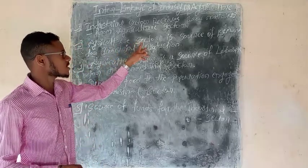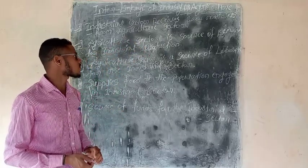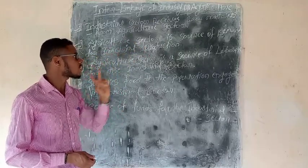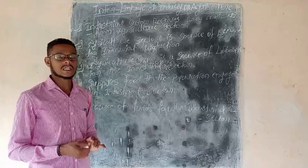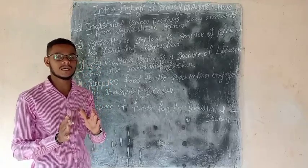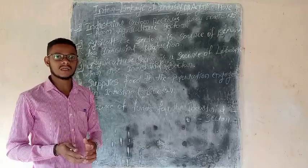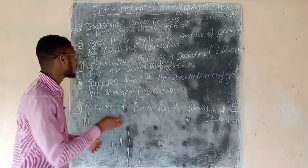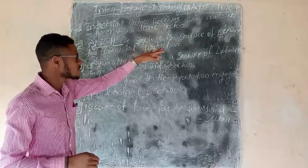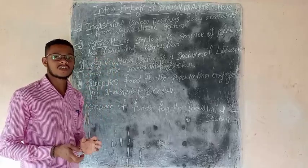It is a source of industrial production and capital formation. The most important thing is the agriculture sector. The agriculture sector is the source of demand for industrial production.